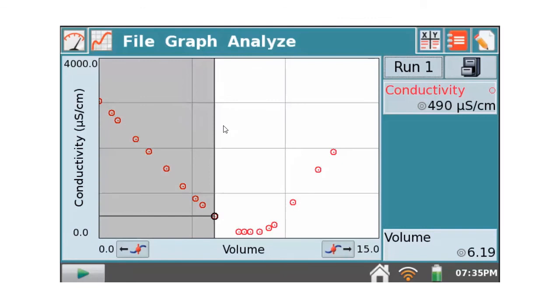If you don't recall how to do straight line stuff on here, you drag over the part of the plot you want to analyze. You go to Analyze, Curve Fit. Click on Curve Fit, click on Conductivity.